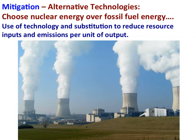A mitigation strategy to reduce the causes of climate change would be to increase nuclear energy. Replace industrial fossil fuel energy with nuclear energy. This would reduce carbon dioxide emissions, but there are risks. Be thoughtful here.